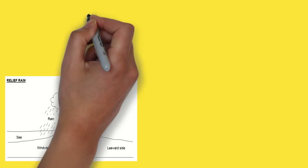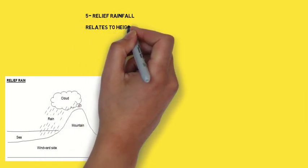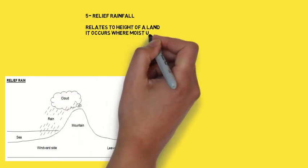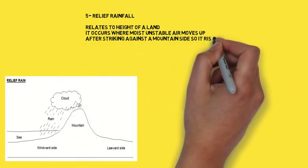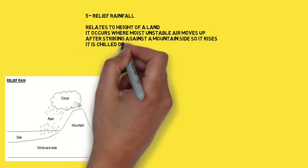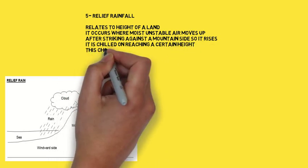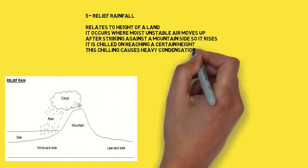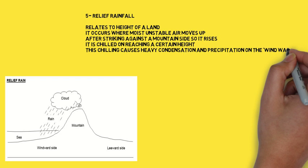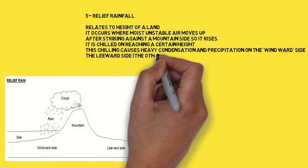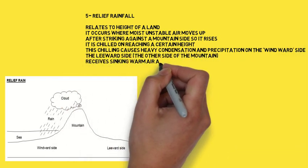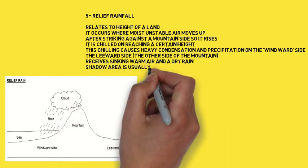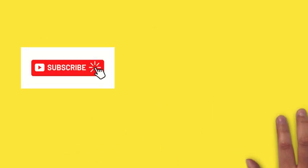The fifth source of rainfall is relief rainfall. It relates to the height of the land. It occurs where moist, unstable air moves up after striking against a mountainside and rises. It is chilled on reaching a certain height. This chilling causes heavy condensation and precipitation on the windward side. The leeward side, which is the other side of the mountain, receives sinking warm air and a dry rain shadow area is usually formed. Areas with high altitude receive relief rainfall.